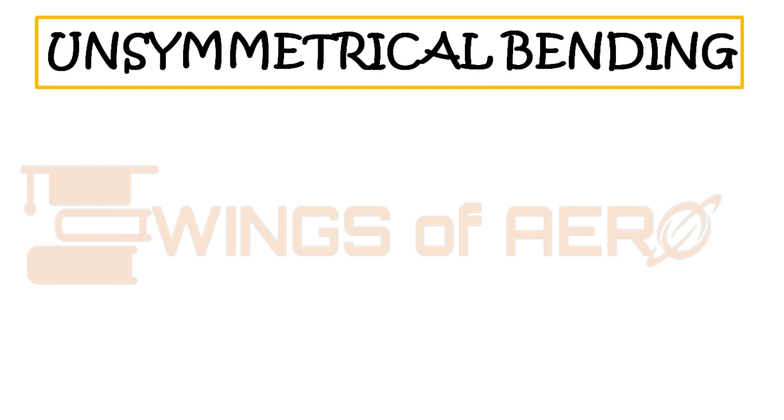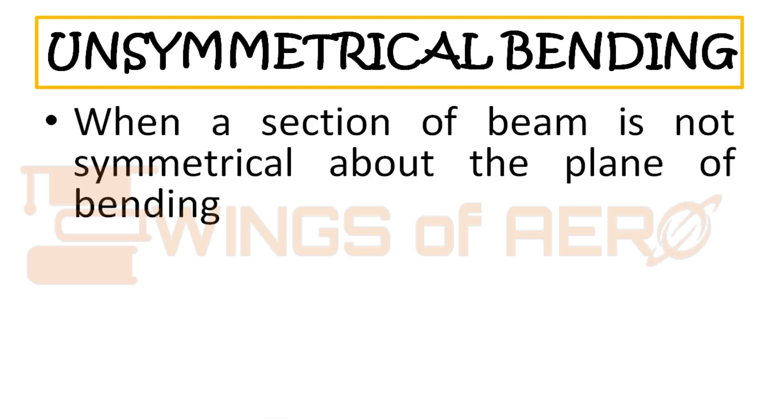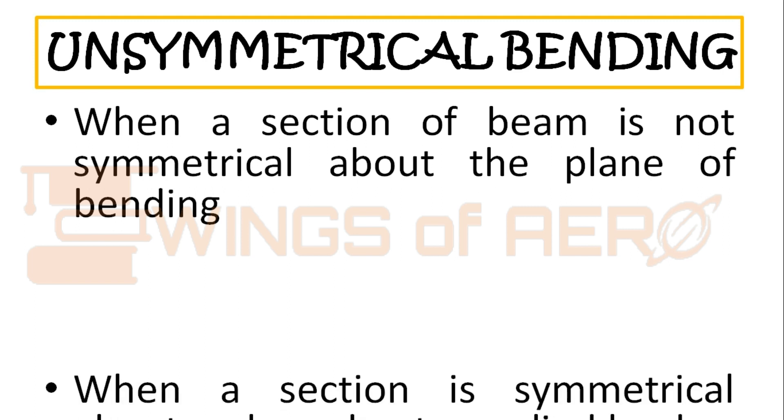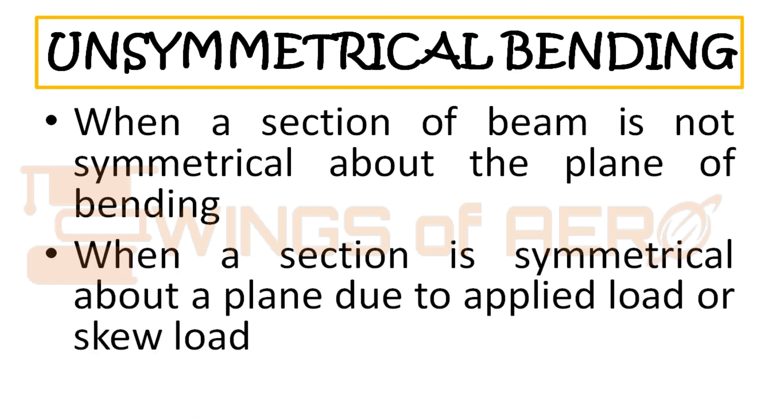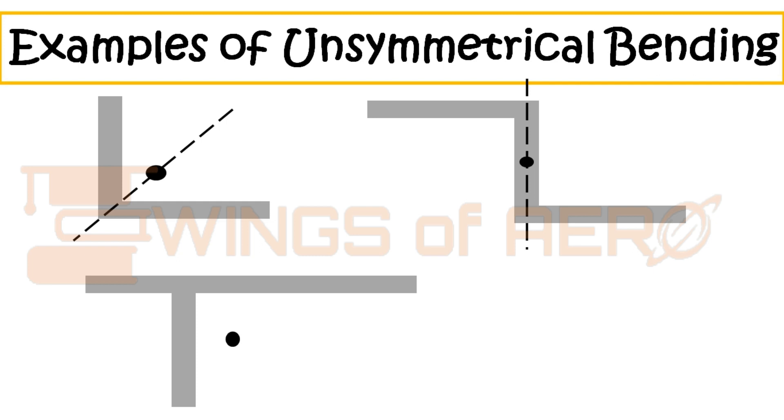When the section of a beam is not symmetrical about the plane of bending, it causes unsymmetrical bending. Second, if the section is symmetric but above the plane we applied a skew load or inclined load, it causes and leads to unsymmetrical bending. These are a few examples of unsymmetrical bending as shown or displayed on your screen. Here are a few unsymmetrical sections which lead to unsymmetrical bending: L section or angle section, Z section, and T section.